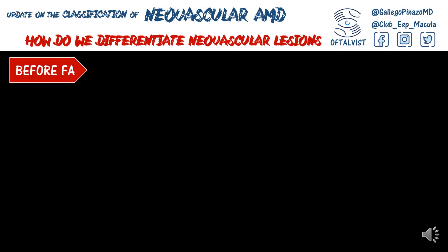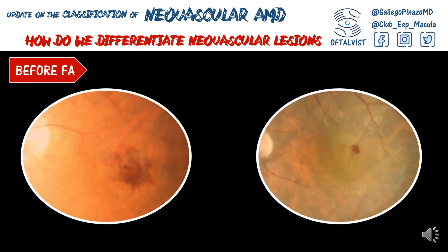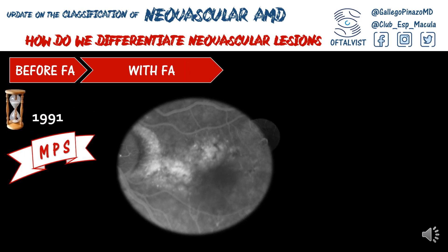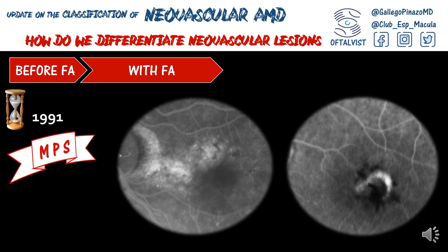So how do we differentiate neovascular lesions? In the old days, by looking at the fundus of a certain patient, it was almost impossible to know what type of lesion was present, because we had no treatment and no other imaging modalities. But with the advent of FAF and new therapeutic possibilities with laser photocoagulation and photodynamic therapy, we learned to distinguish occult and classic lesions and their different response to each particular treatment.